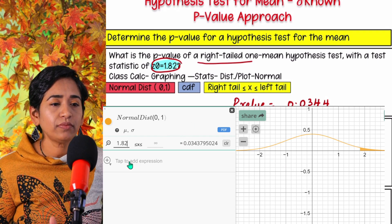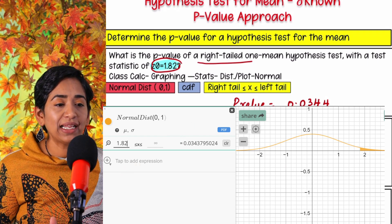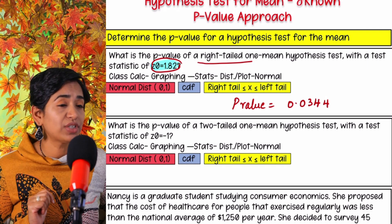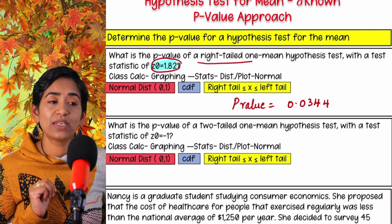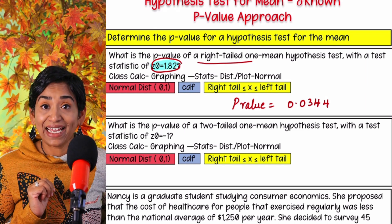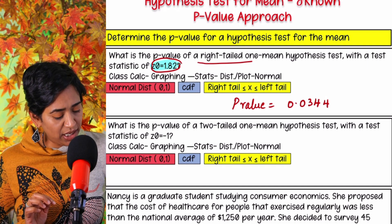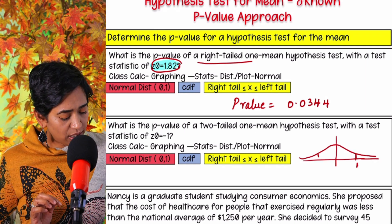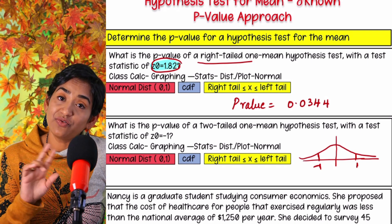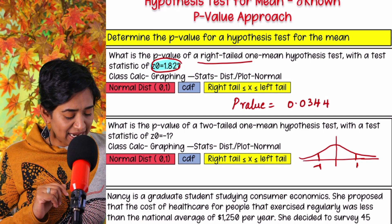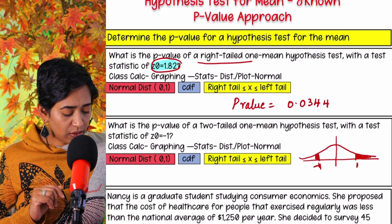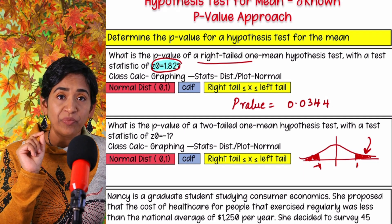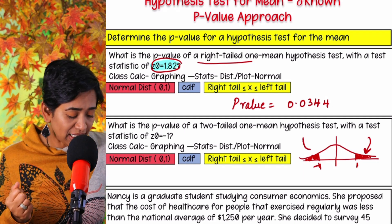Now let's look at the next one. What is the p-value for a two-tailed test? Be very careful on how to do the two-tailed. The p-value for a two-tailed test with z-value of negative one: when it's a two-tailed test, it's exactly opposite - negative one and positive one are my two tails. In your class calc, you will only get one value, so you have to multiply that by two because you need the other p-value as well.